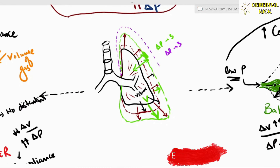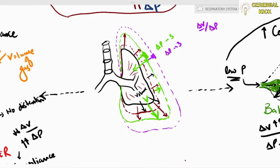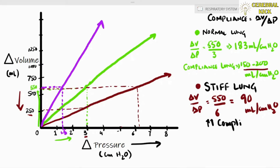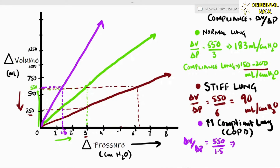In a highly compliant system, marked in purple, a net pressure change of 3 would further expand the lung. To accommodate 550 ml, it requires only 1.5 centimeters of water change in pressure — around 366 ml per centimeter of water. The high compliant system has much greater compliance compared to the normal lung shown in green.